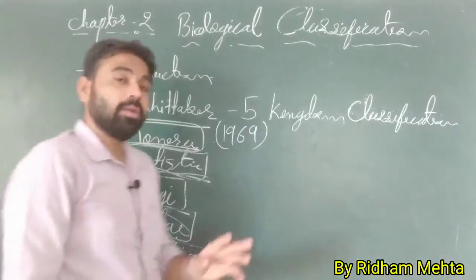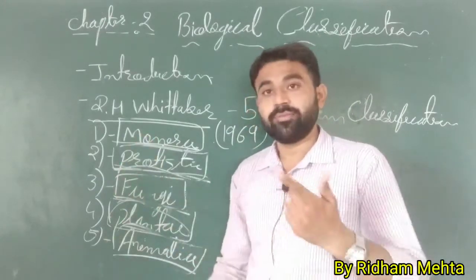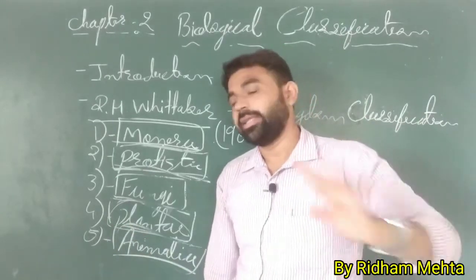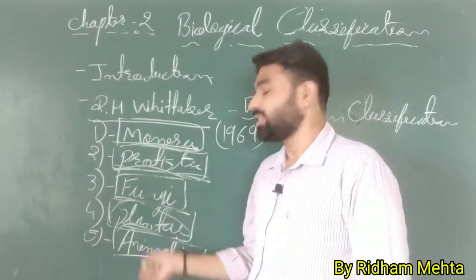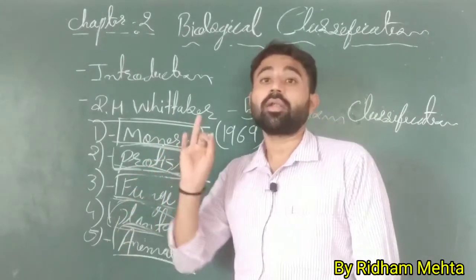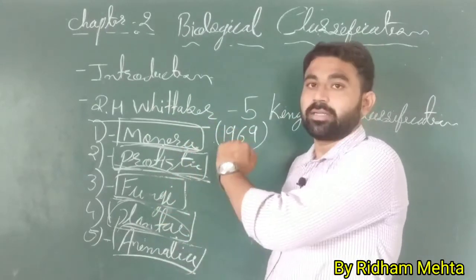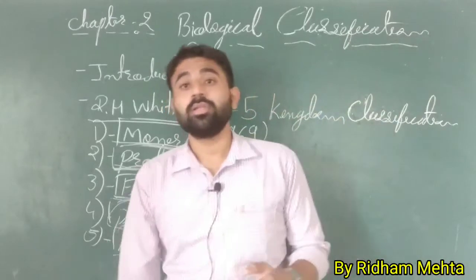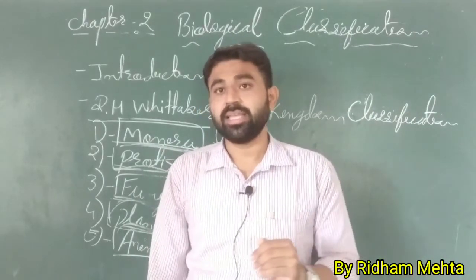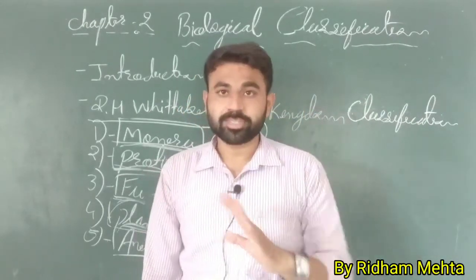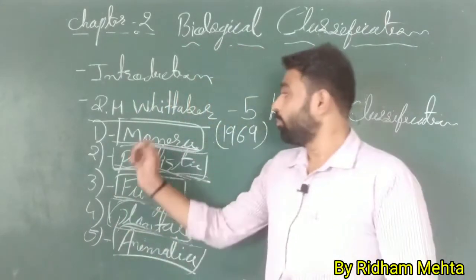In this chapter, we will study the five kingdoms: first Monera, then Protista, then Fungi, then Plantae, and finally Animalia. In the next lectures, we will go deeper into each kingdom — what organisms are in Monera, what is in Protista, what is in Fungi, what is in Plantae, and what is in Animalia.